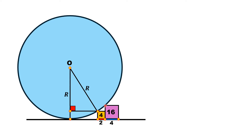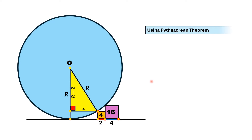We draw a line segment from the center perpendicular to the base line, forming a 90-degree angle. From here, the whole vertical length is r and the patch at the bottom has length 2, so the remaining vertical length is r minus 2. Let us suppose the horizontal distance as x. So the yellow shaded region is a right triangle with legs r minus 2 and x, and hypotenuse r.